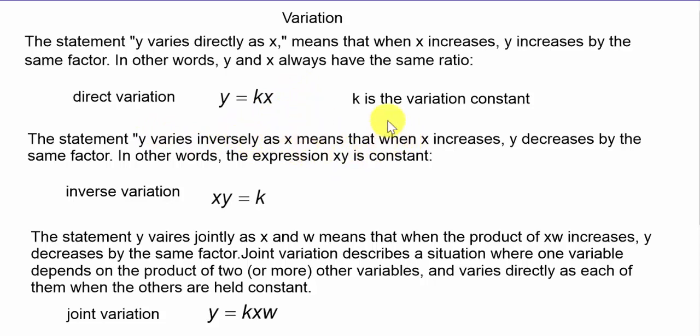Lastly, joint variation is where you have a direct variation - here's your Y equals KX - but you're varying directly with a product of two terms, so Y equals KXW.